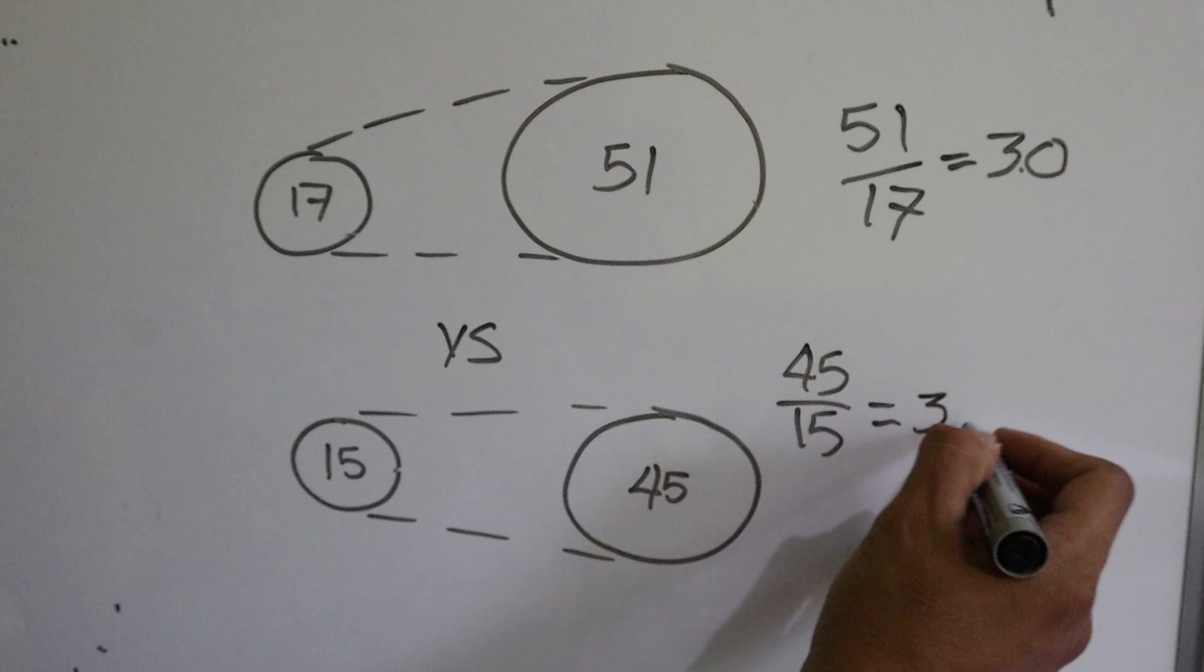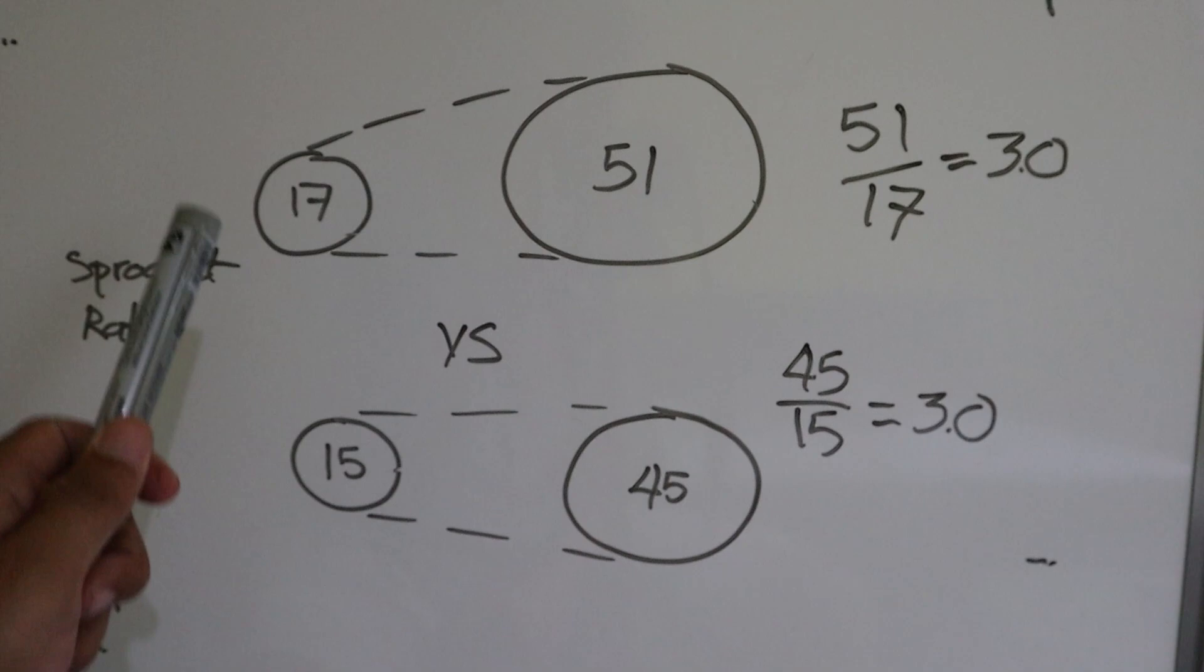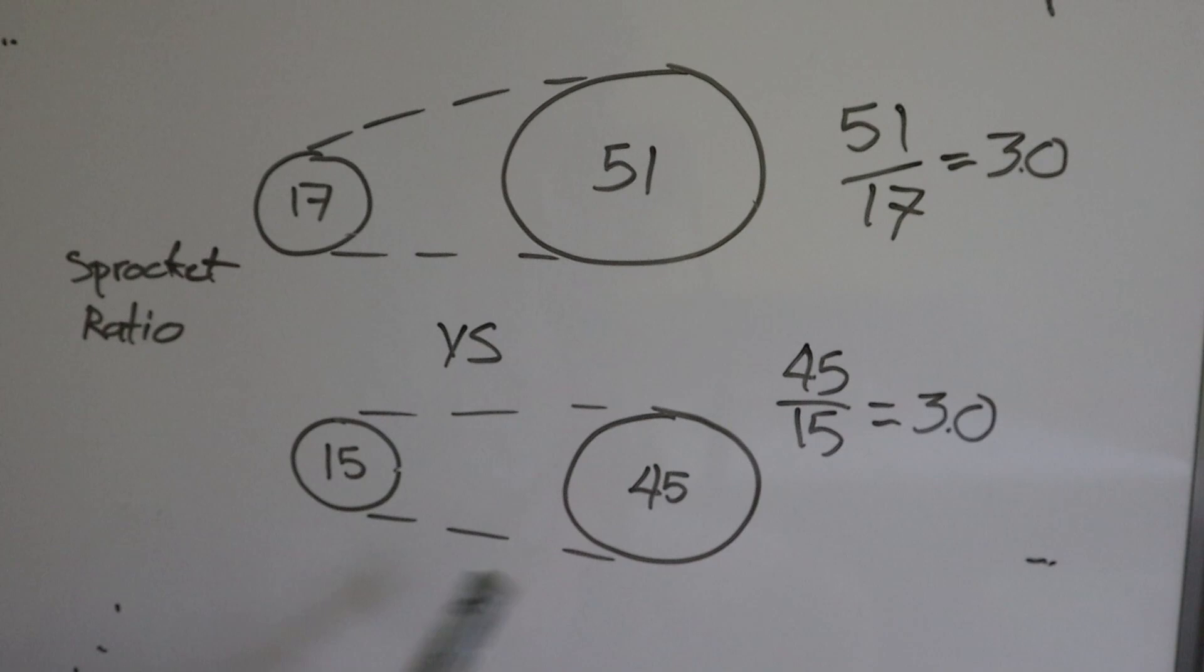Hello everyone. Ang topic natin ngayon ay tungkol sa sprocket ratio. Meron tayo ngayon ditong dalawang sprocket ratio, magkaibang gearing pero pareho lang ng ratio. 17-51 at 15-45. Ito yung ating malaking gear, ito yung ating maliit na gear. Magkaiba yung sukat ng mga sprocket natin pero kapag kinuha natin yung ratio, pareho lang yung ratio, 3.0.